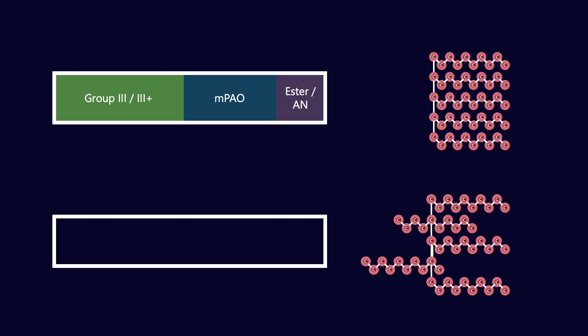As an example, you could have a base stock formulation for an engine oil which is group three or group three plus. Three plus is usually a gas to liquid, so GTL technology. Combine that with some MPAO, and then you've got a co-based stock to help solvate the additives. Usually that's esters, or increasingly, we're also seeing alkylated naphthalenes.